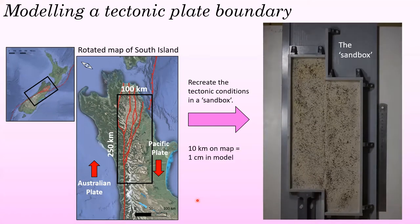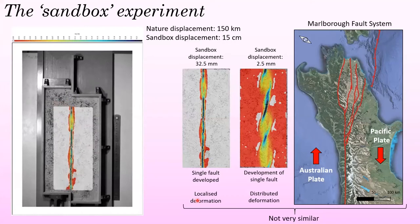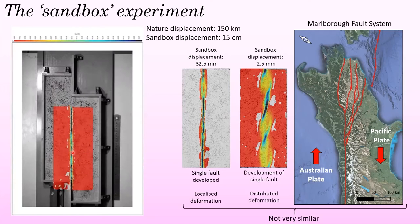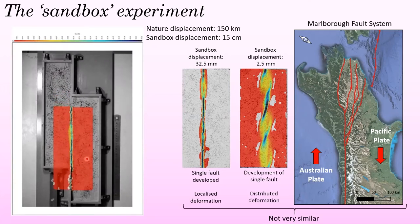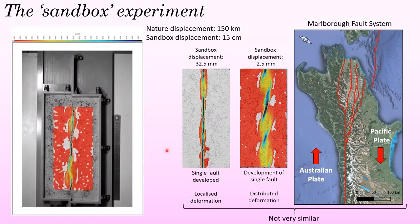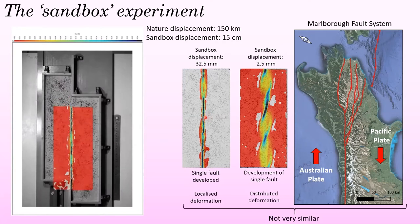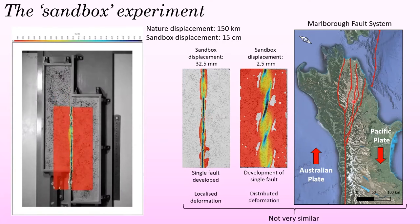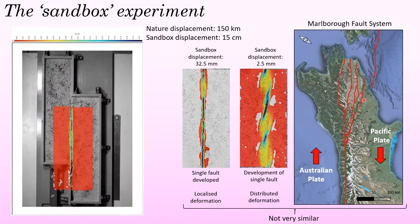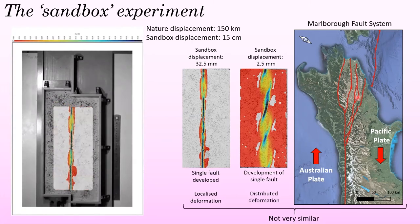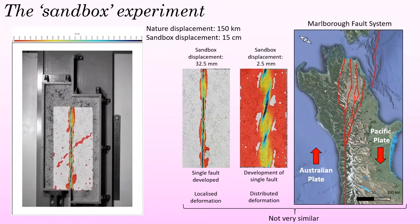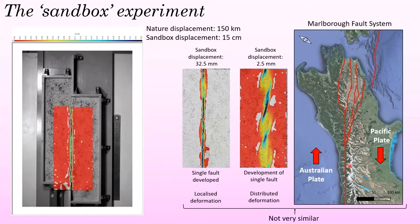Here we can see the model running with a deformation map on top — blue showing the highest amounts of deformation and red the lowest. As the model runs, the deformation quickly becomes localized on a single fault over the discontinuity at the base of the box. Comparing this back to the Marlborough fault system, you can see it doesn't look very similar — this model actually looks more similar to the single fault to the south of the Marlborough fault system.